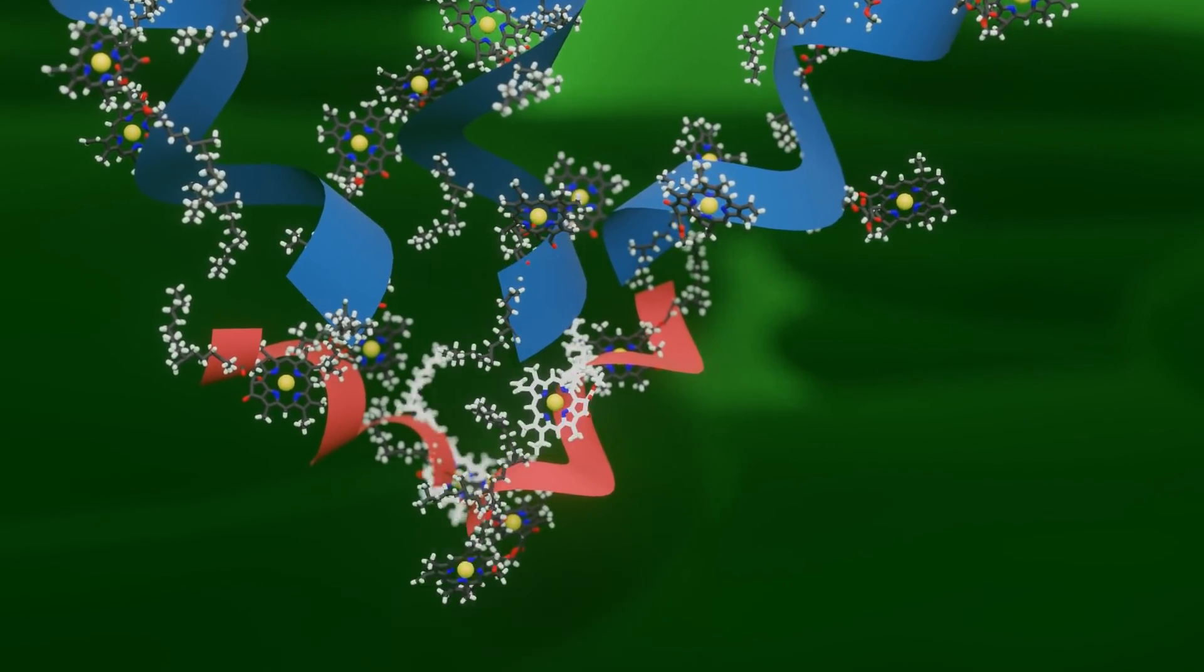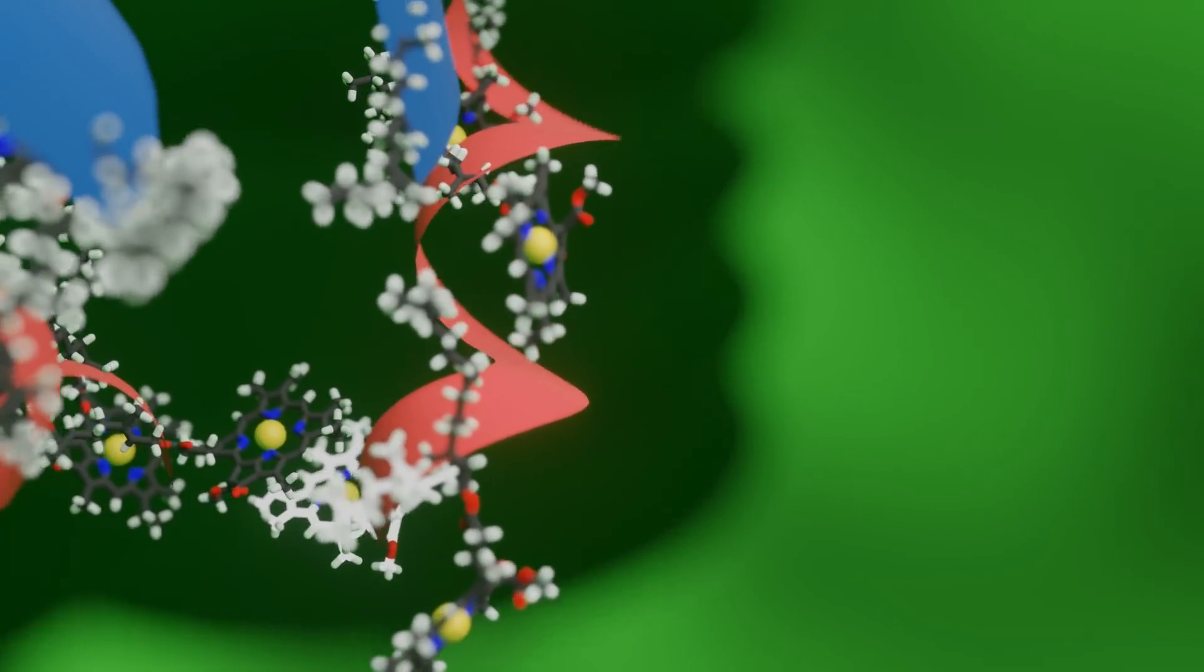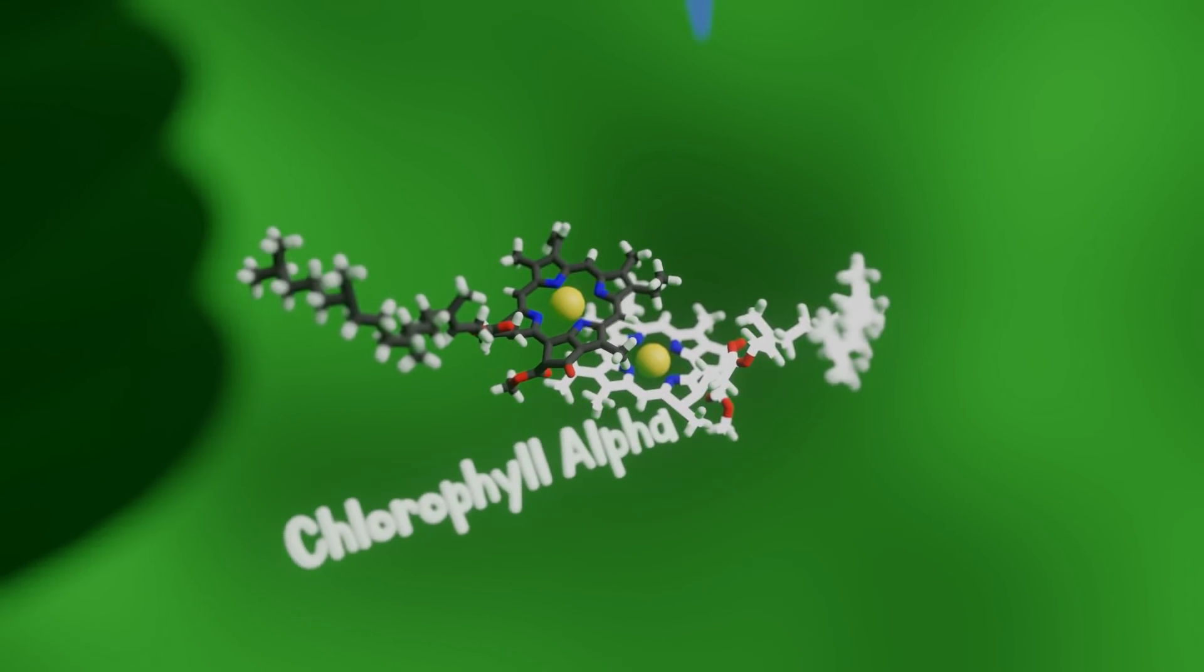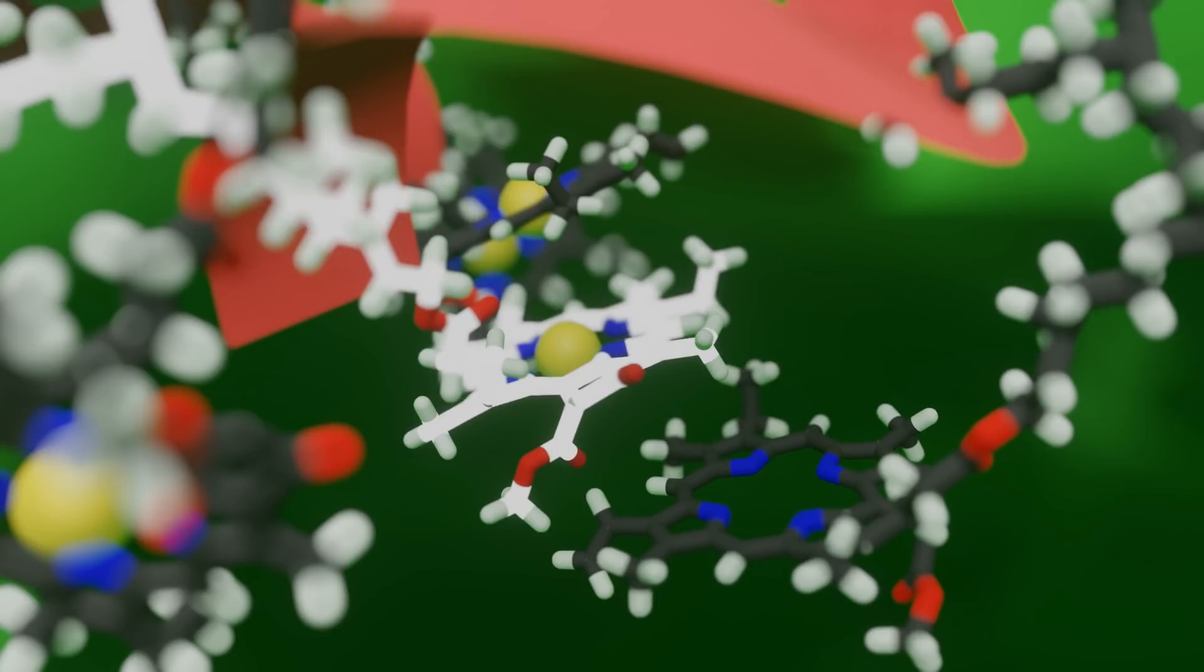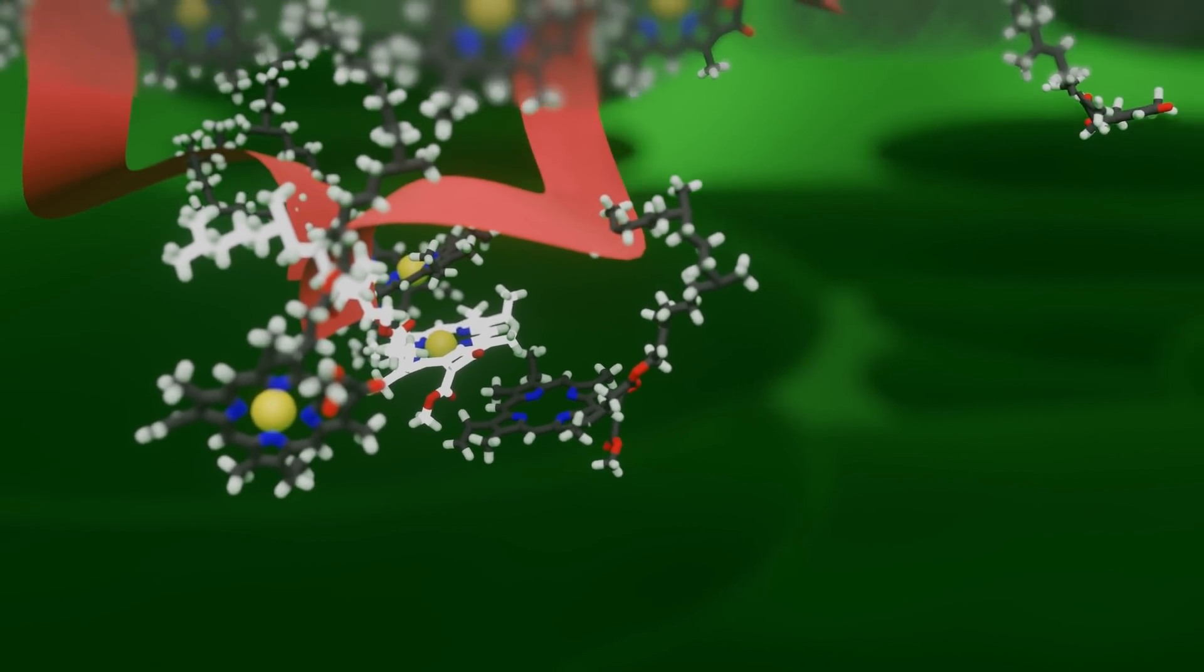Eventually, that excitation will be transferred to the reaction center. In every reaction center are two chlorophyll alpha molecules. When the energy is then passed on to them, the excited electron is suddenly in close proximity to an electron acceptor molecule called pheophyton.